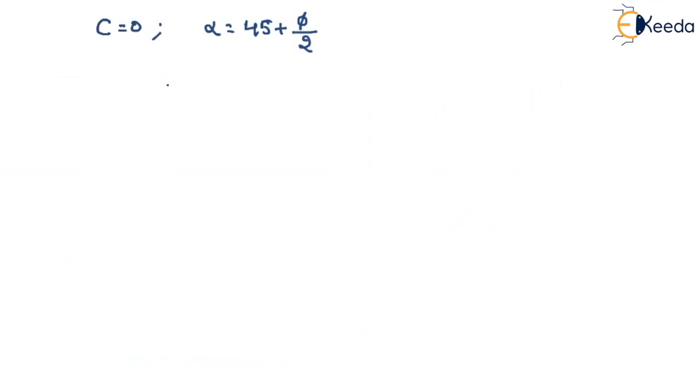Sigma 1, that is nothing but vertical stress, that will be equal to sigma 3, that is nothing but horizontal stress, then tan square of alpha. Alpha is nothing but 45 plus phi by 2, plus c is also equal to 0. Now, we are interested in finding the horizontal stress. So if I rewrite the terms, what I will get? Sigma h, that will be equal to cot square of 45 plus phi by 2 into sigma v.